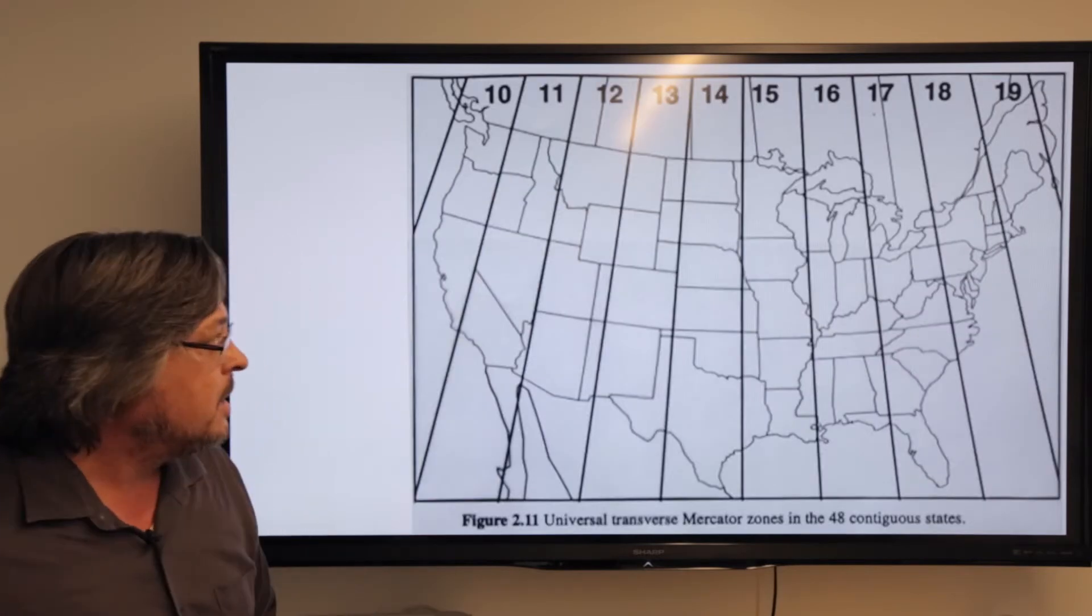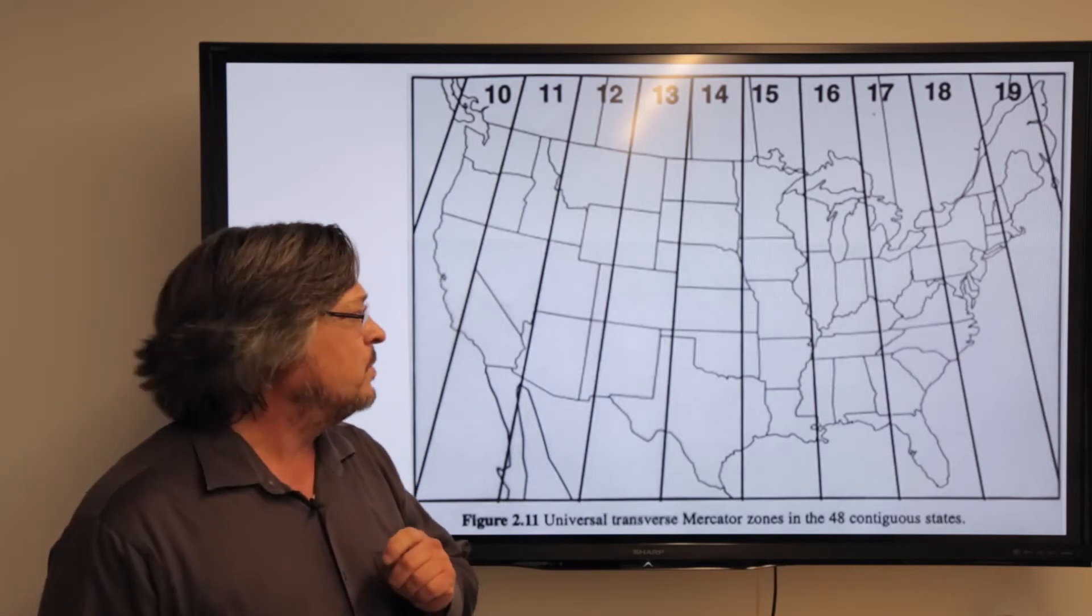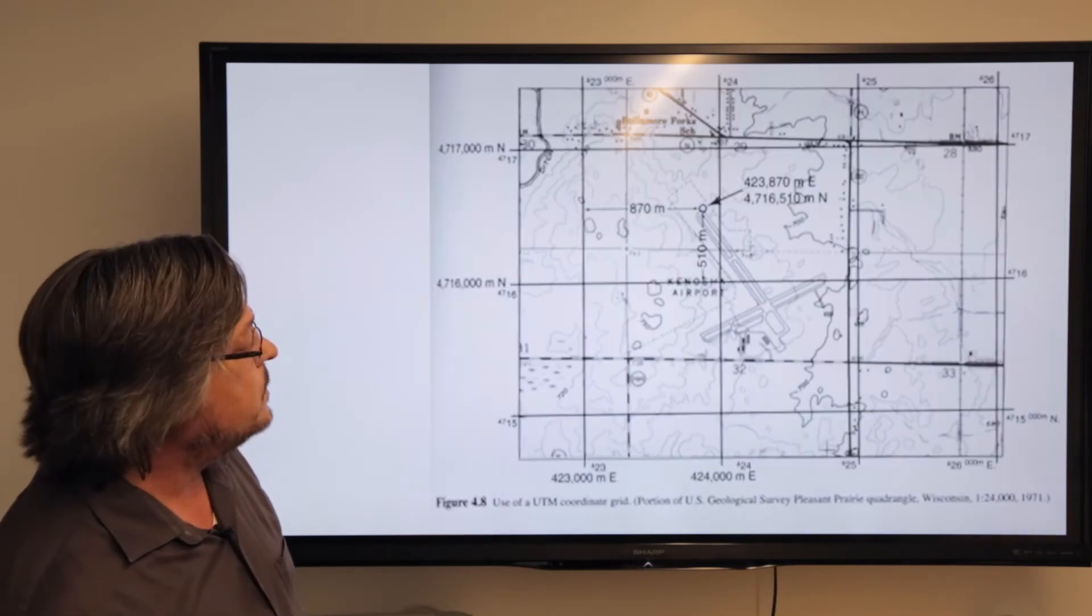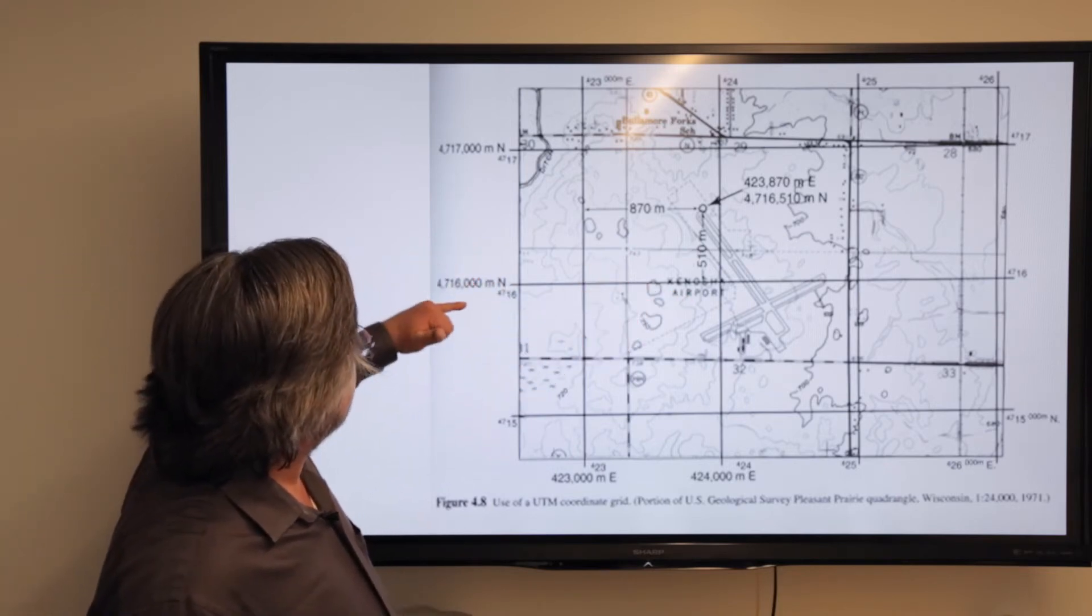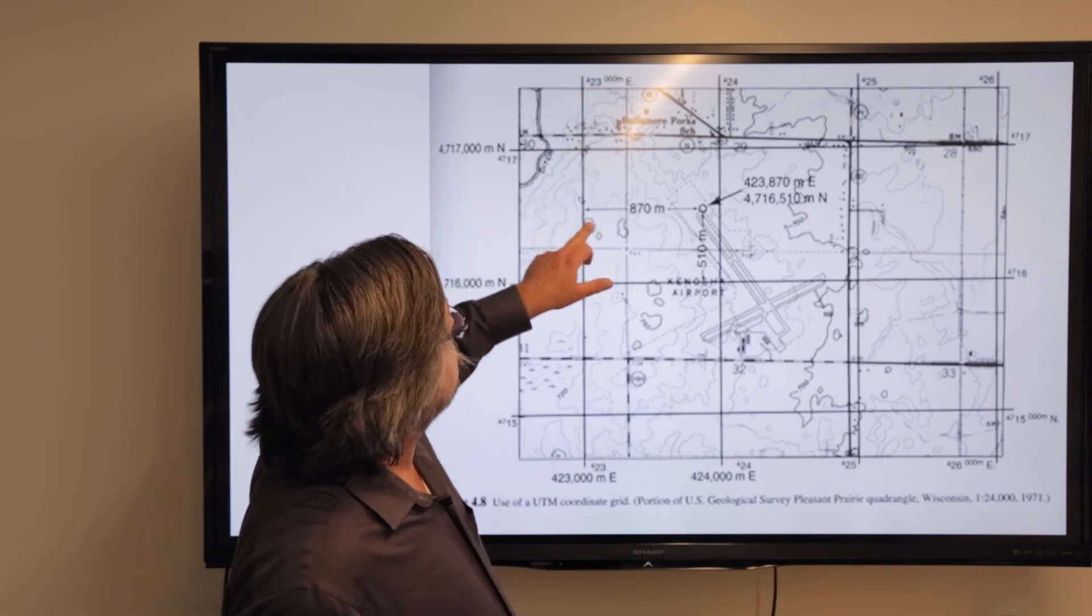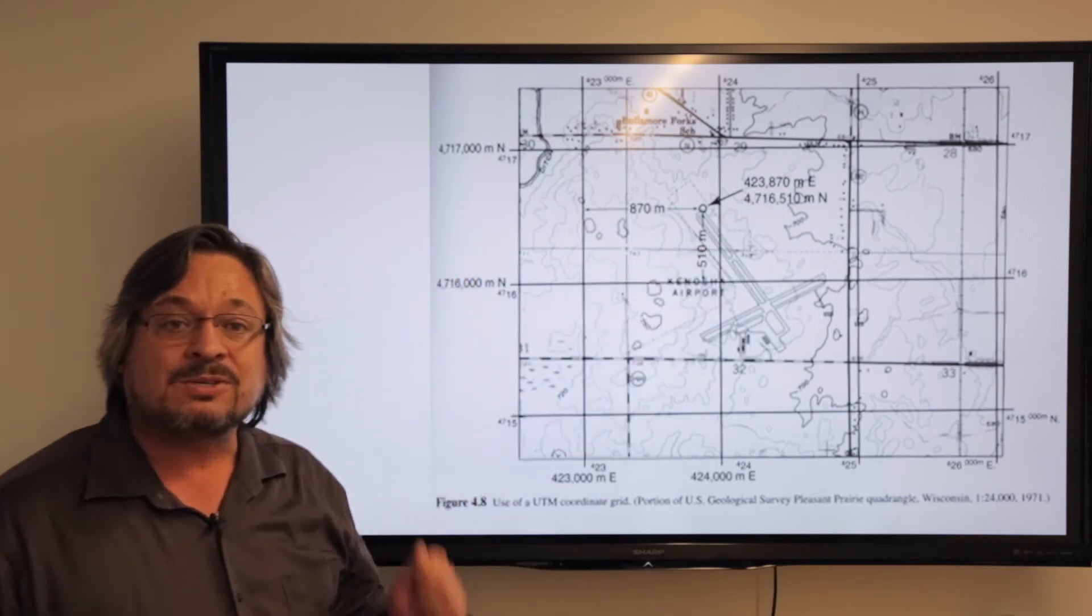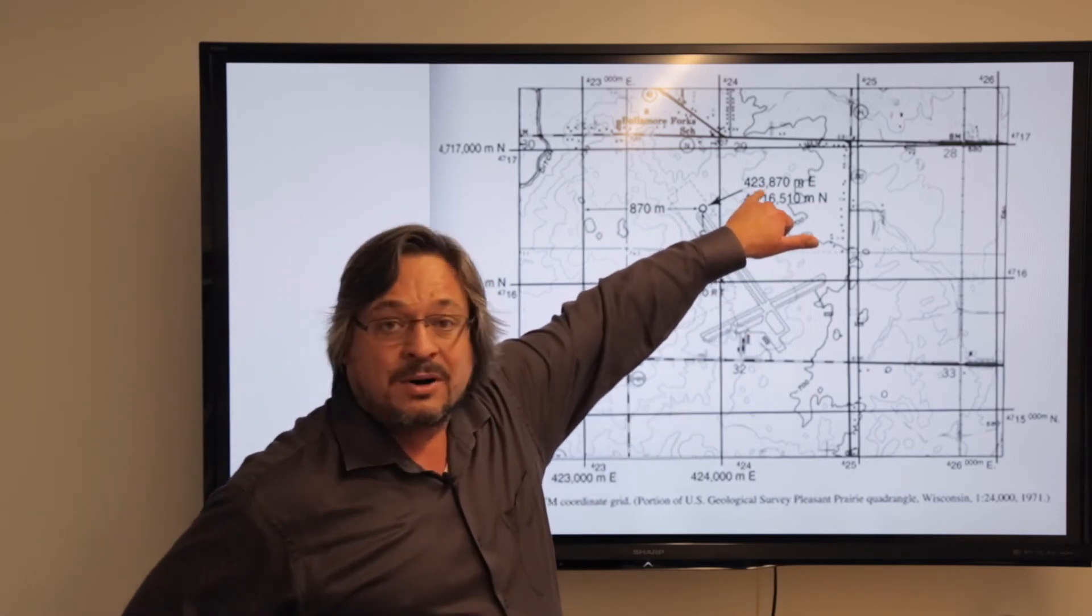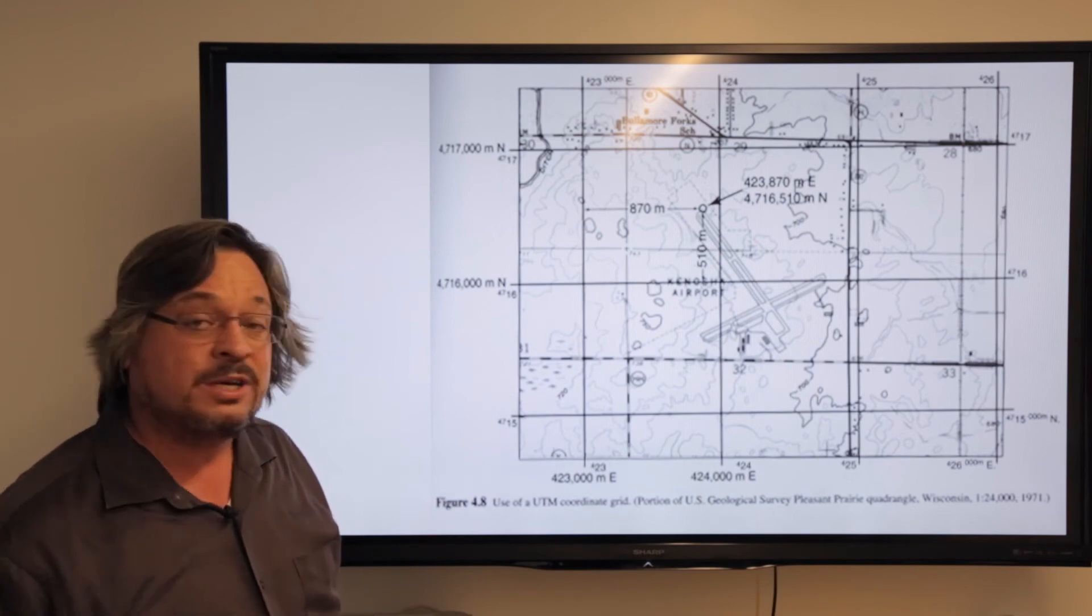When you read a location in UTM, you first give the zone number. Let's look at our airport runway in Wisconsin, which is in zone 16. Remember, number one is over at the international dateline. On a map, you do your right readings first. If I'm reading over from 423,000 meters, it's 870 meters further to the east. Then we get 423,870 meters east. It's below 500,000, so we know we're just a little on the western side of the central meridian within zone 16.